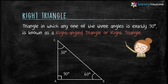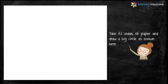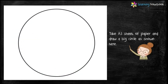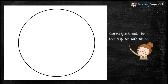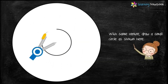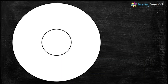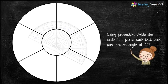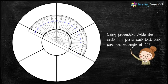Now that we have understood types of triangles on the basis of sides and angles, let's start with the activity. Take one A3 sheet of paper and draw a big circle as shown. Now carefully cut out this circle using a pair of scissors. In the next step, with the same center draw a small circle. Then with the help of a protractor, divide the circle into six parts such that each part has an angle of 60 degrees.